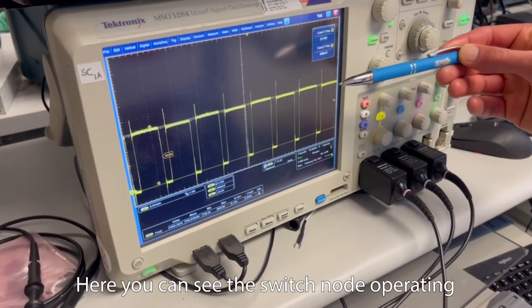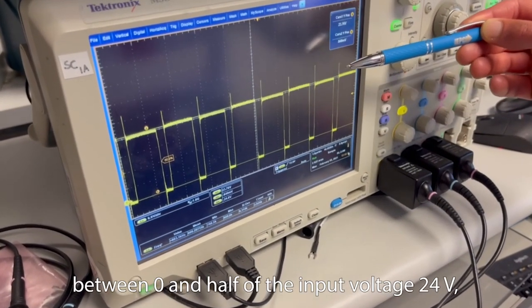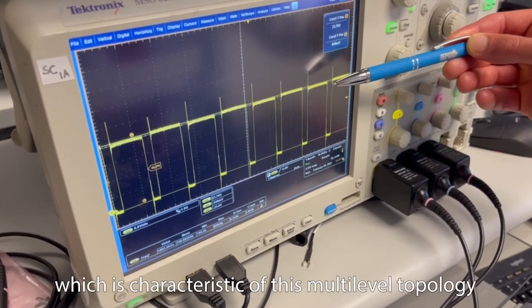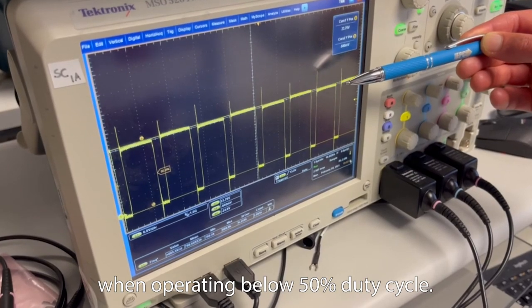Here, you can see the switch node operating between zero and half of the input voltage, 24 volts, which is characteristic of this multi-level topology when operating below 50% duty cycle.